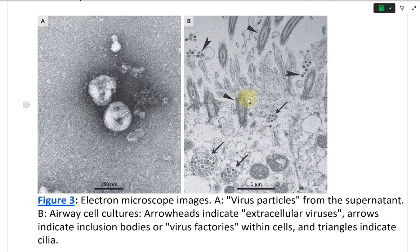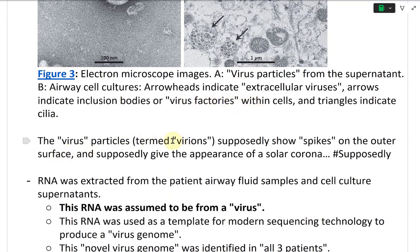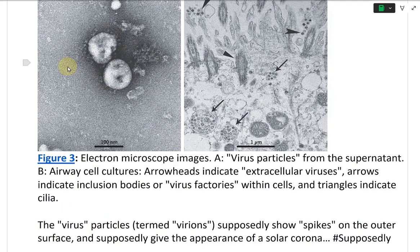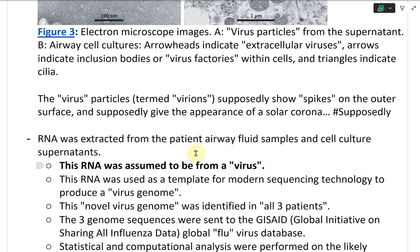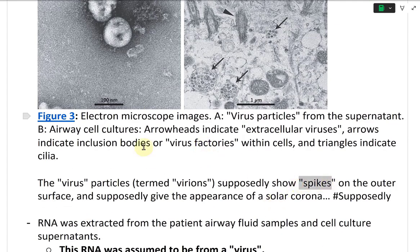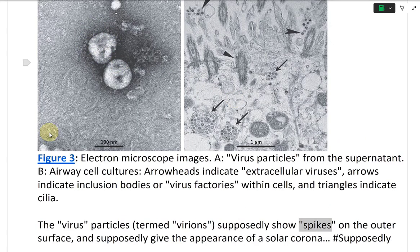So you've got the supernatant and the ultra-thin sections of the airway epithelial cells that were supposedly infected — and again, a number of these airway cells are from cancer patients. Electron microscope images: figure A shows virus particles from the supernatant; figure B shows airway cell cultures where arrowheads indicate extracellular viruses, arrows indicate inclusion bodies or virus factors within cells, and triangles indicate cilia. The virus particles supposedly showed spikes on the outer surface and supposedly give the appearance of a solar corona — hashtag supposedly.